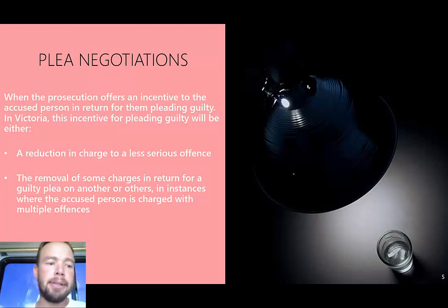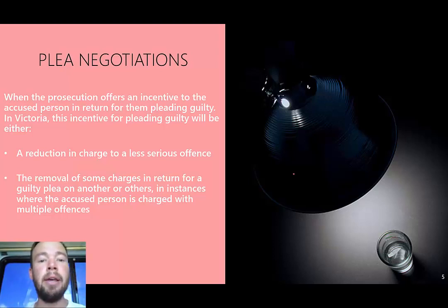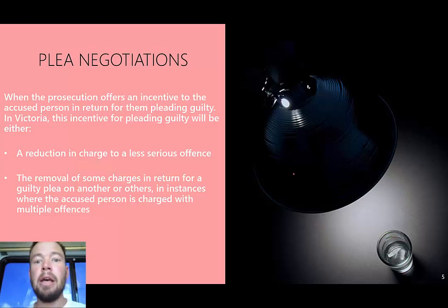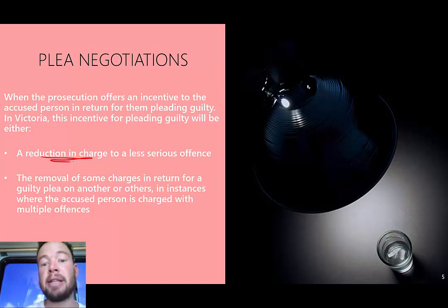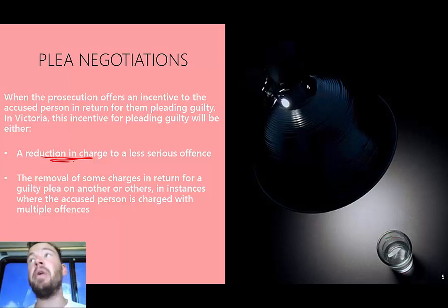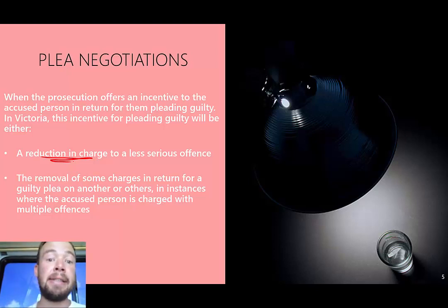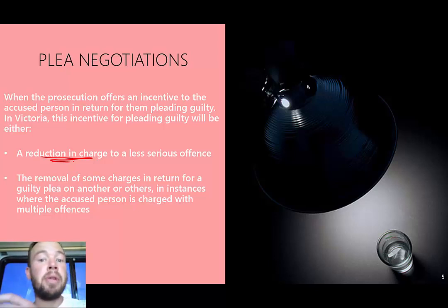Plea negotiations are basically where the prosecution says to an accused person: we want you to plead guilty, and we're going to offer you an incentive to do that. We're going to offer you a reduced charge. One of the most common examples is taking a charge down from murder to manslaughter. The incentive is that a lesser charge naturally comes with a lesser sanction — a murder sentence is upwards of 15 to 20 plus years, whereas a manslaughter sentence might be closer to 10.